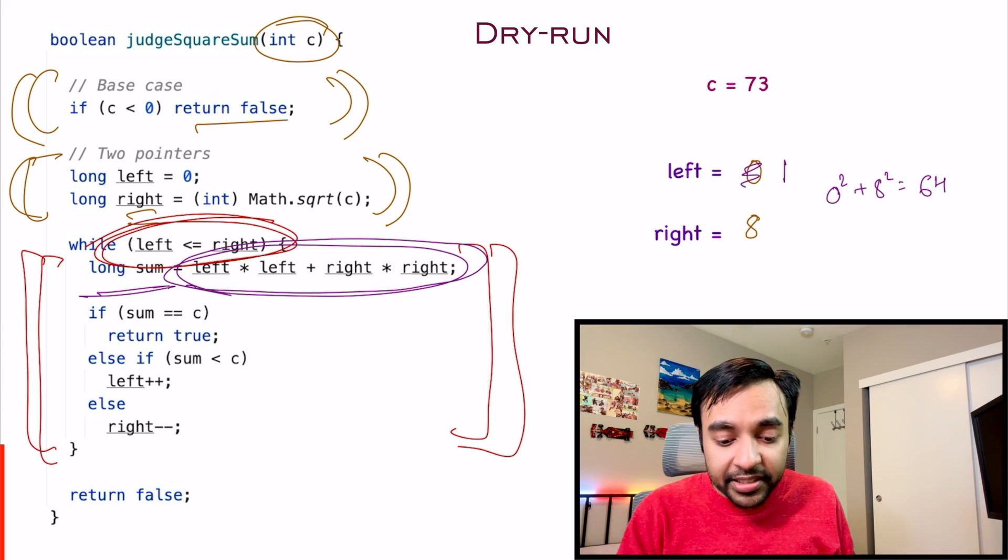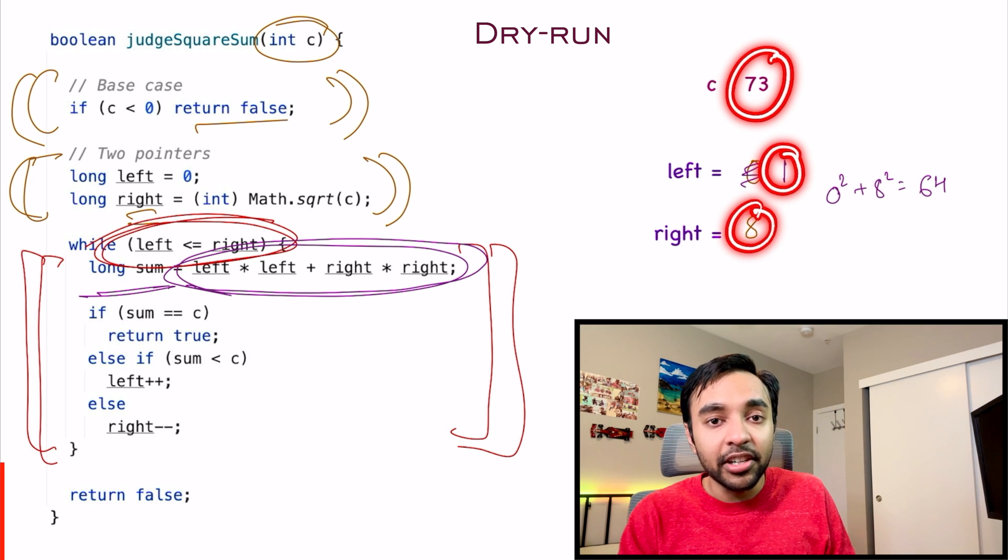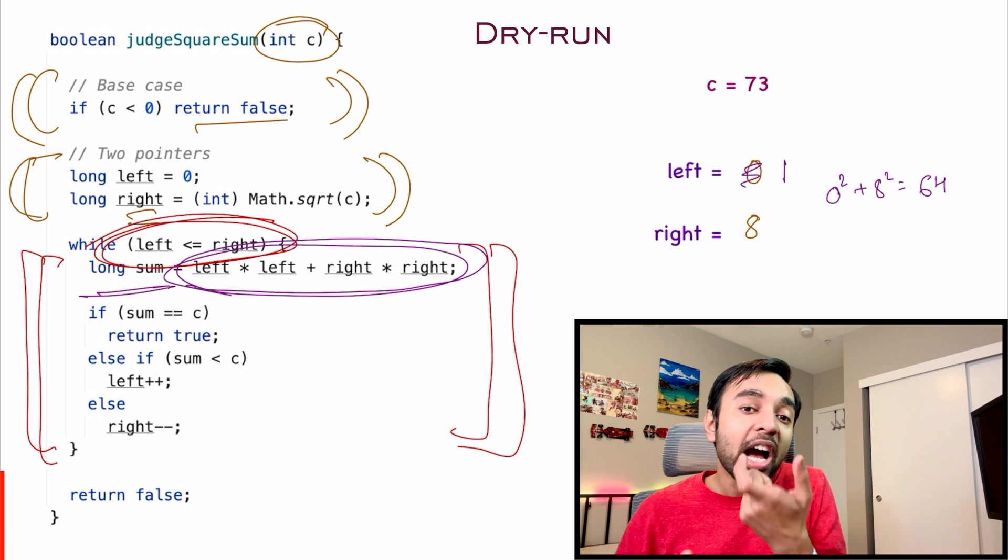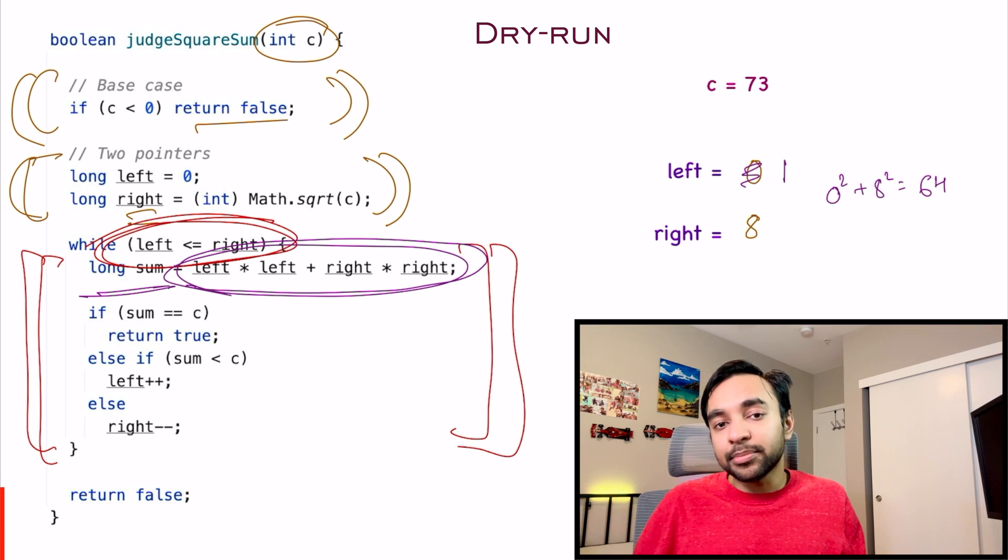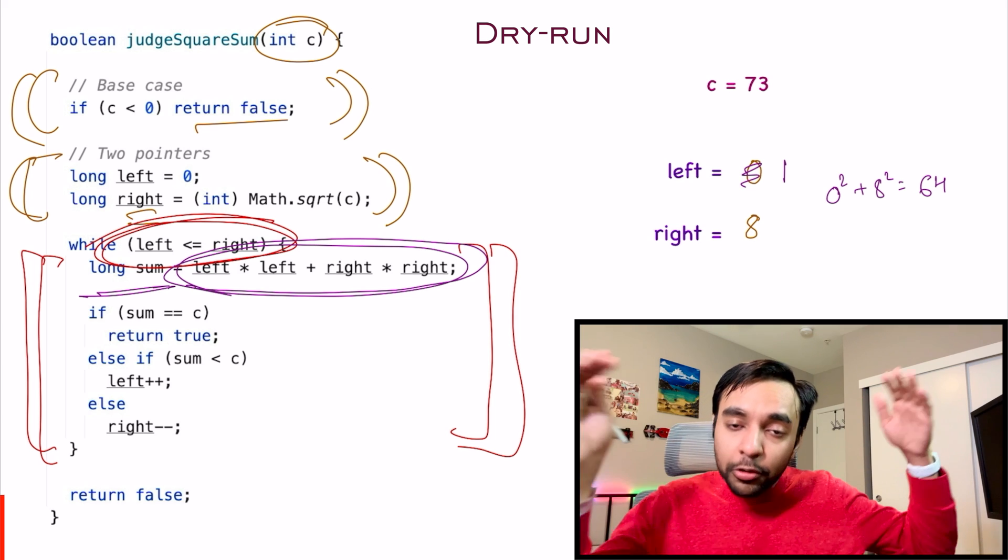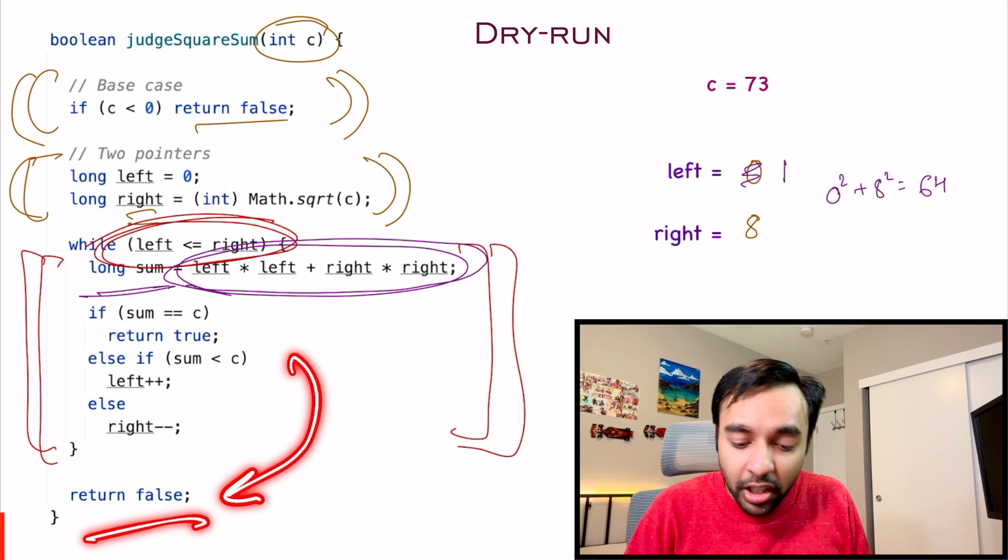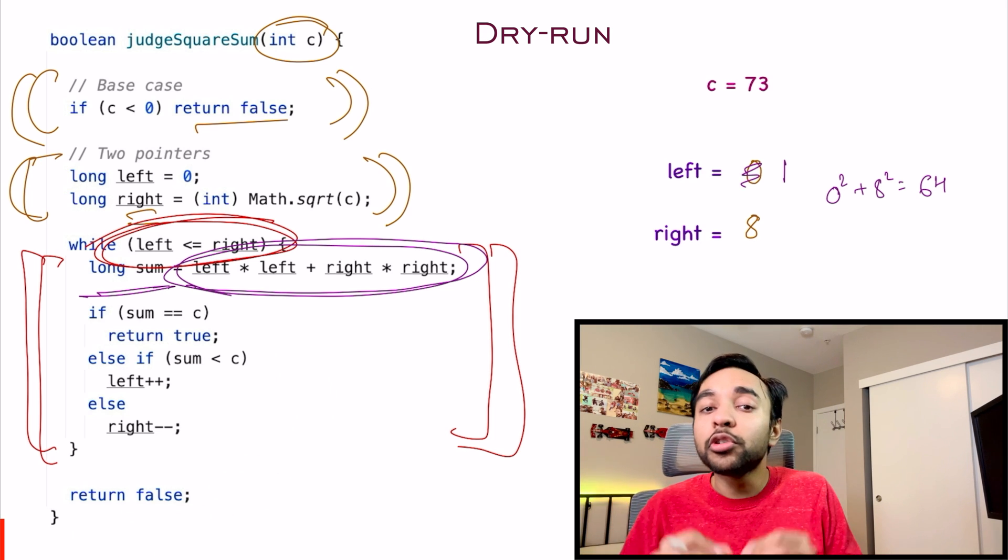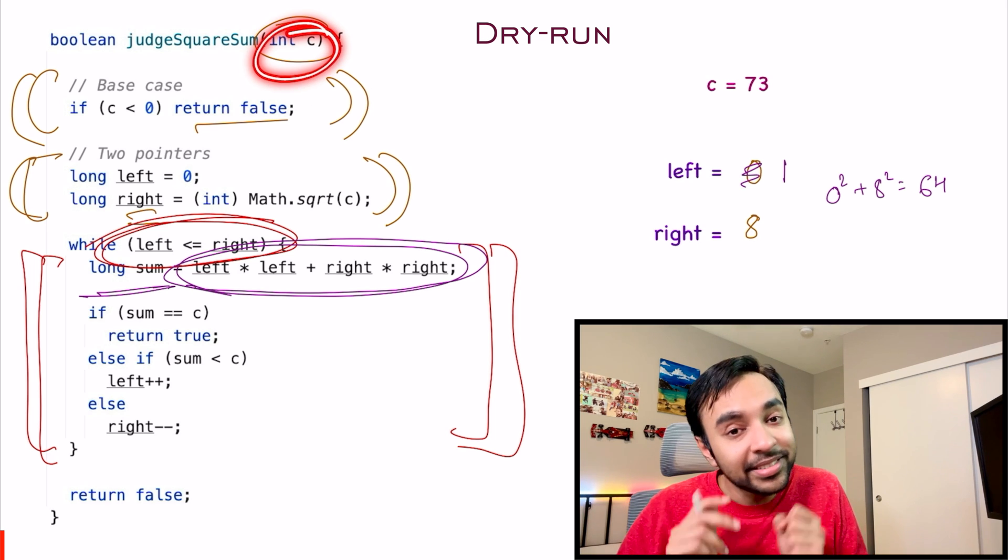If for any reason, when you add these two numbers, the sum becomes greater than 73, that means you have to pick a smaller number. And that is where you do a right minus minus. So if you just exit the loop and don't find any combination, you simply get out and then you return false. That means you did not find any pair which when squared and added gives you the number c.